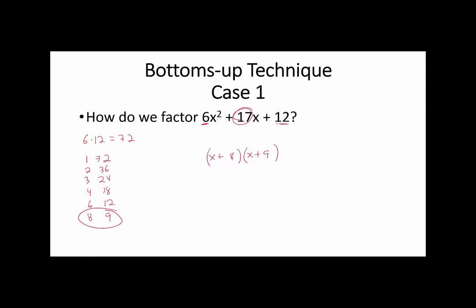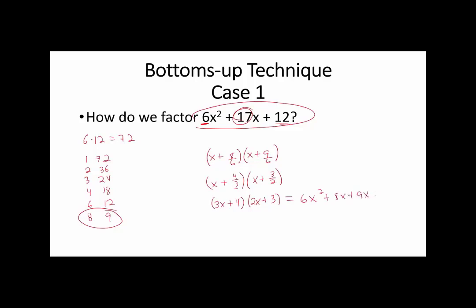Take 8 and 9: we create two binomials, x+8 and x+9. The next step is to divide the constant terms by the quadratic coefficient, 6. This becomes x+4/3 and x+3/2. Since those are fractions, we multiply the first binomial by 3 to get 3x+4, and the second by 2 to get 2x+3. We claim this is the factorization: checking, 6x²+8x+9x+12 = 6x²+17x+12 — indeed what we wanted.